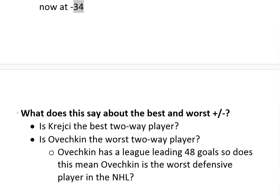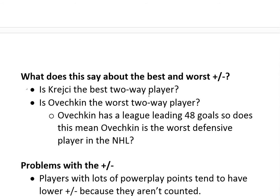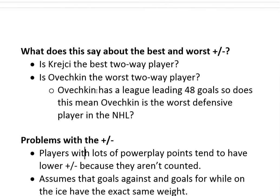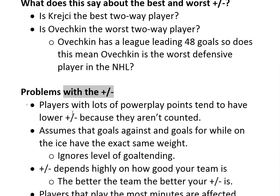So what does this say about the best and worst plus-minus? Is Krejci the best two-way player, or is Ovechkin the worst two-way player? Ovechkin has a league-leading 48 goals, so does this mean Ovechkin is the worst defensive player in the league? If he's great offensively but his plus-minus is the worst, that would mean by plus-minus logic that he's the worst defensive player in the league. But how accurate is this?